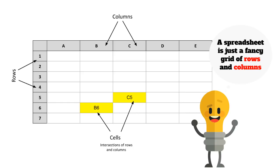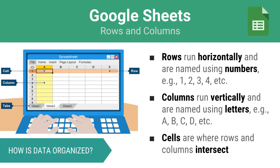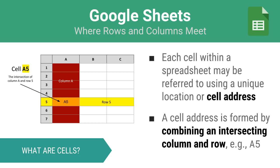Rows run horizontally and are numbered like 1, 2, 3, and so on. Columns run vertically and are represented using letters like A, B, and C. Cells are the places where columns and rows intersect. Each cell is referred to by its cell address, which combines the column's letter and the row's number. For example, we would refer to the cell where column A and row 5 meet as A5.